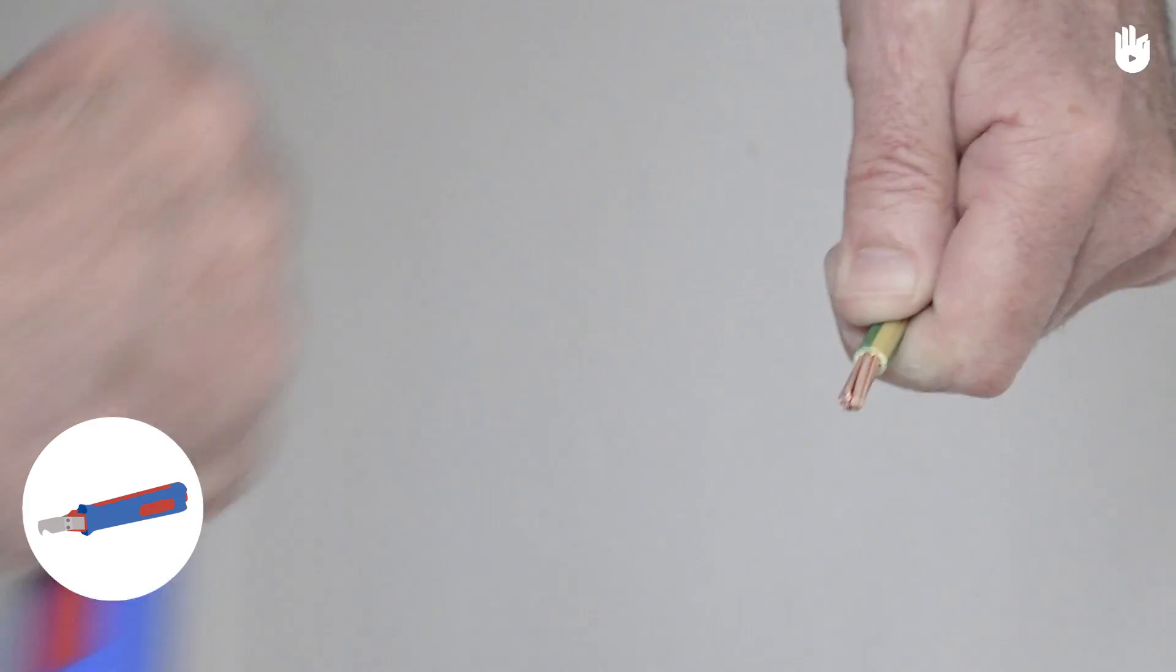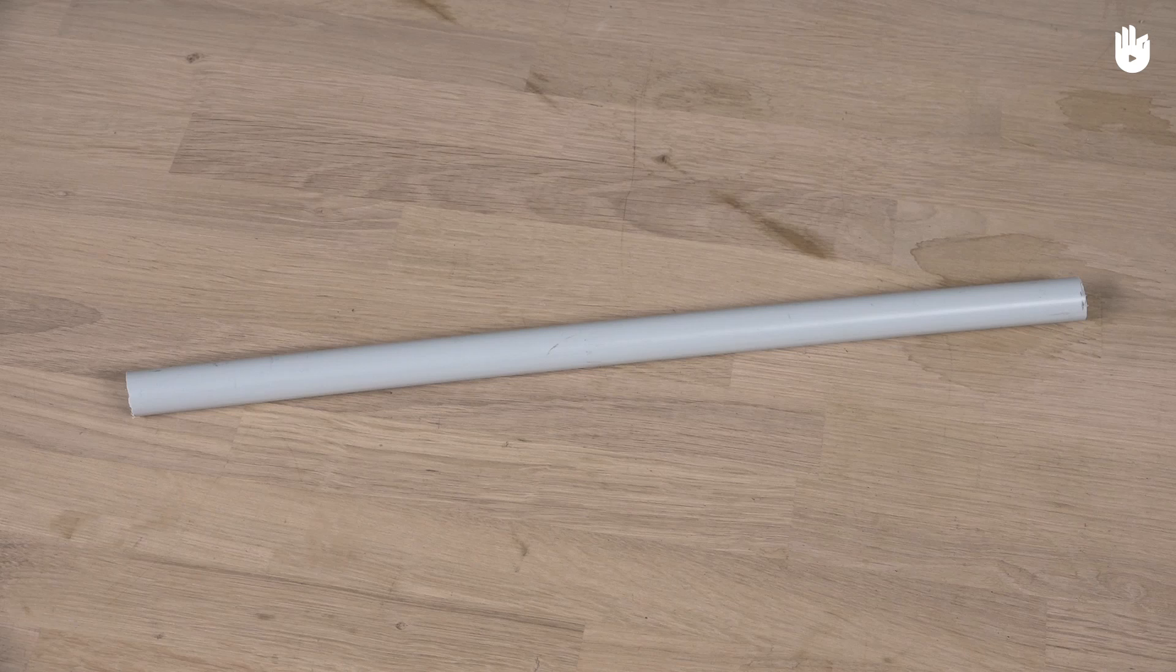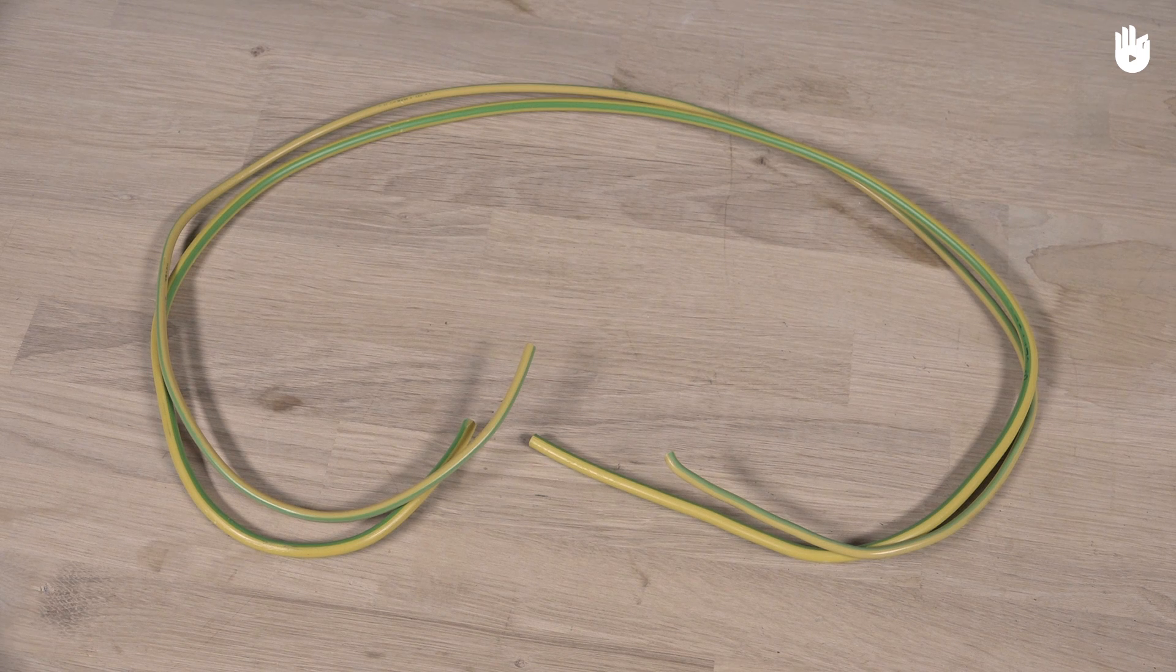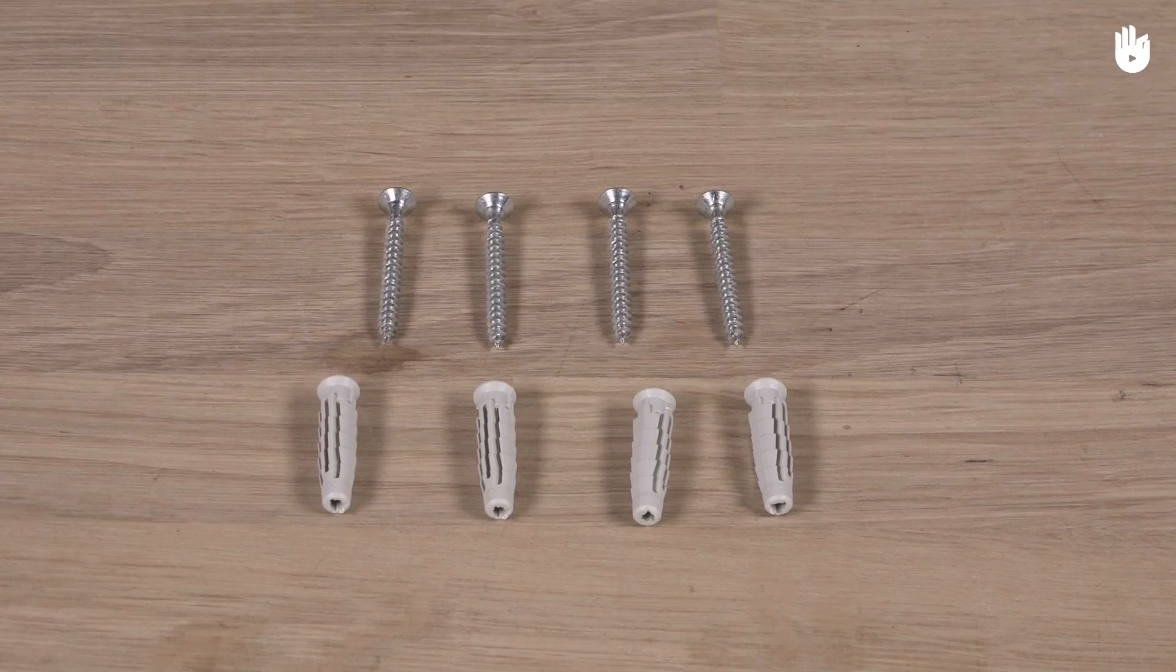You will also need a cable stripper, a rigid tube, a main ground terminal, 16mm squared ground conductors, 4 screws and 4 screw plugs, and mounting brackets.